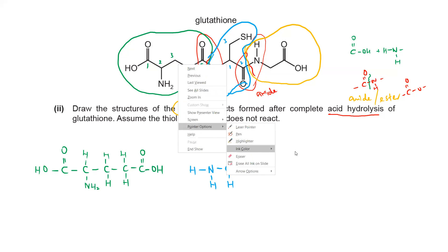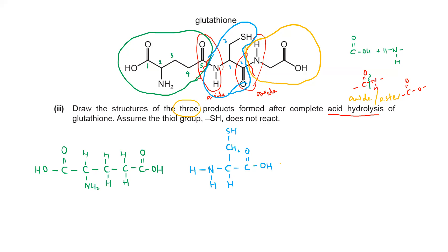The third product is the orange color part - a smaller one with only two carbons. Starting with the NH, which becomes NH2, bonded to carbon number one with two hydrogens. Carbon number two from the carboxylic acid. These are the three products for the acid hydrolysis of glutathione.